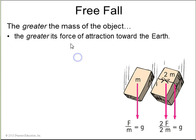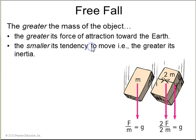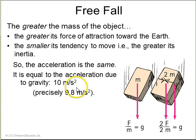We know from before that the greater the mass of the object, the greater its force of attraction towards the Earth. That's the force of gravity. But also, smaller its tendency to move. The mass is inversely proportional to the acceleration. So, it turns out that these two effects cancel.